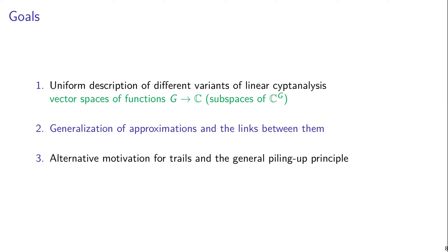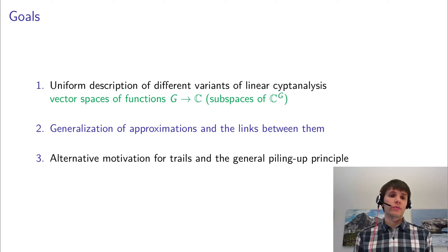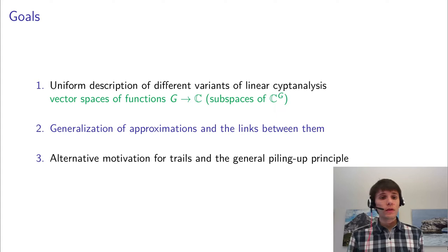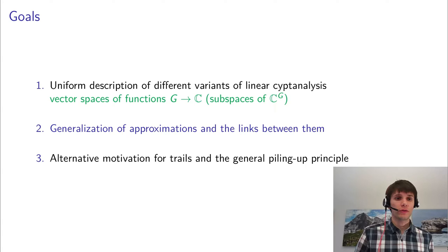So now this provides a way of describing different variants of linear cryptanalysis in a uniform way — especially those input and output properties can all be represented by vector spaces of functions from G to the complex numbers. And now, based on that, we can generalize the notion of a linear approximation and then give some links between different types of approximations. So an approximation is just a pair of subspaces.